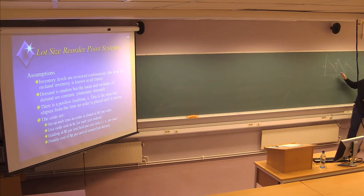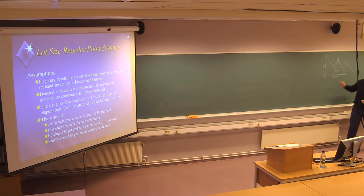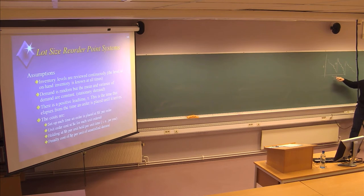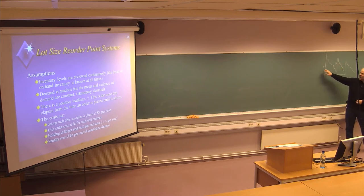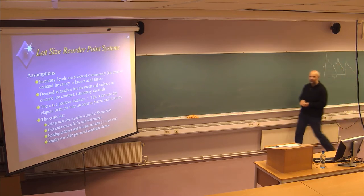In the deterministic situation where you have a straight line, the reorder point is easy to calculate — you just calculate the demand in the lead time. But now we have stochasticity, we have uncertainty, and we need to find the optimal combination of Q, the order size, and R, the reorder point.